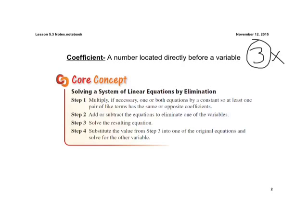We have four steps to solve by elimination. First step: multiply, if necessary, one or both equations by a constant so we can get one of the variables, either x or y, to eliminate itself. We're going to eliminate by adding the two equations together.